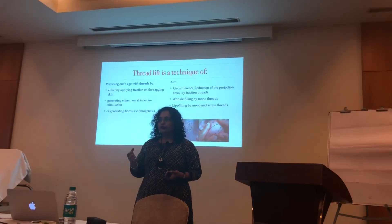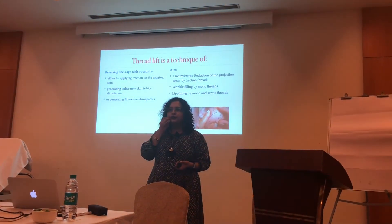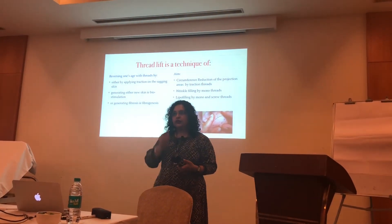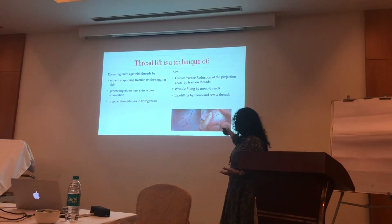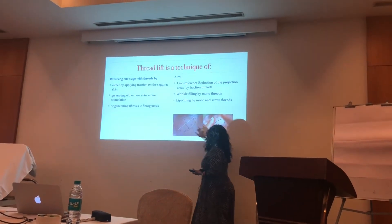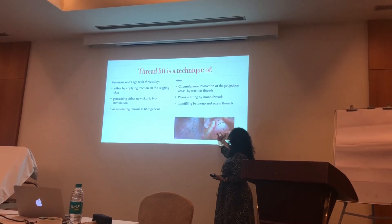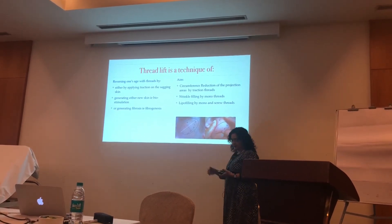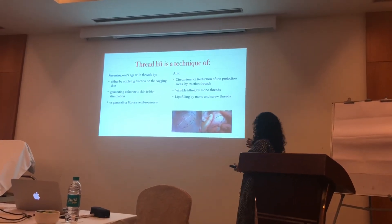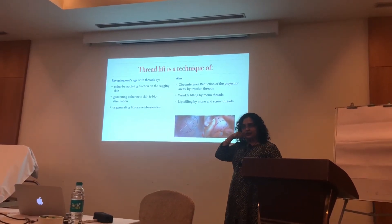To achieve that, we need to reduce the volume in one area and push it upward. That is what circumference reduction means — this circumference becomes smaller by pushing the cheek upward. That is circumference reduction of the projection areas by traction threads, where we pull the skin upwards.